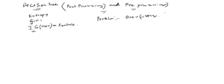What does overfitting mean? When you are using the training data you will get very good, high accuracy. But what will happen when you use unseen data — you will not get that kind of accuracy.